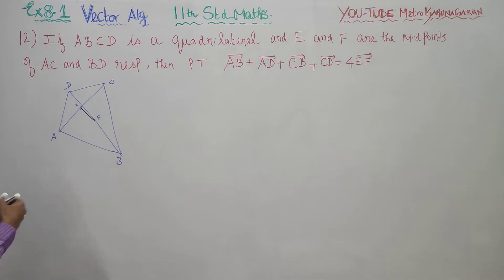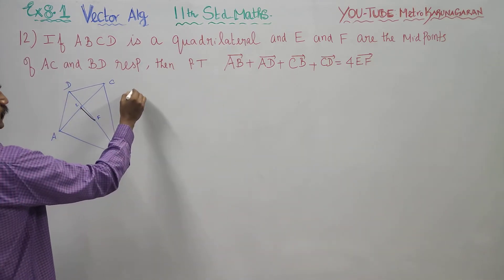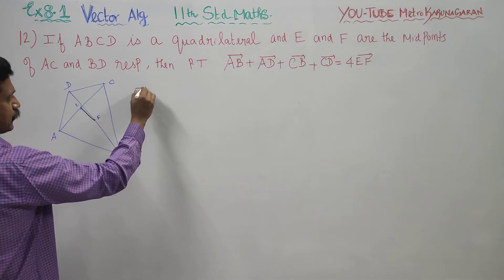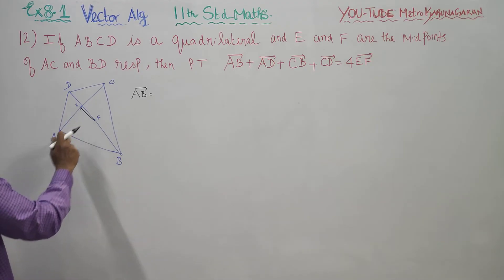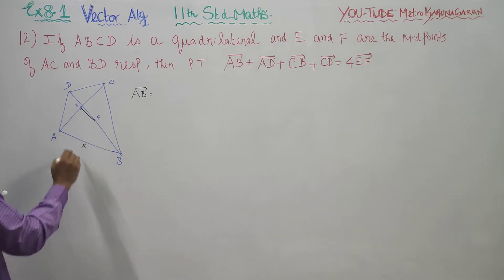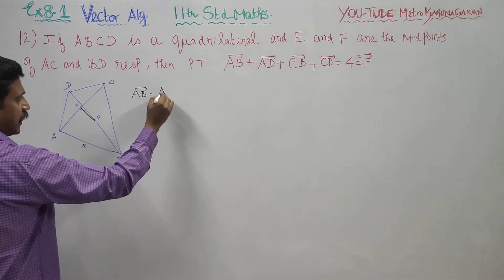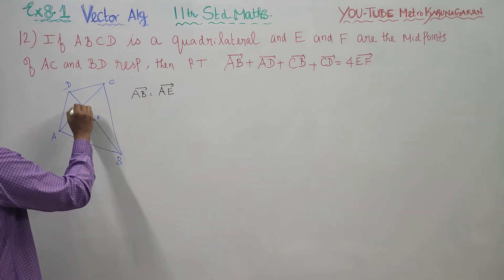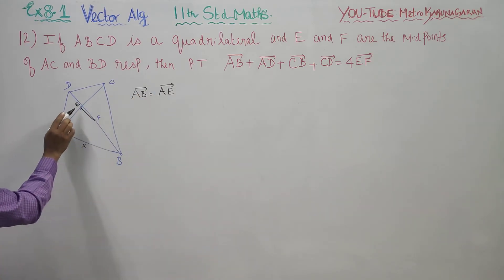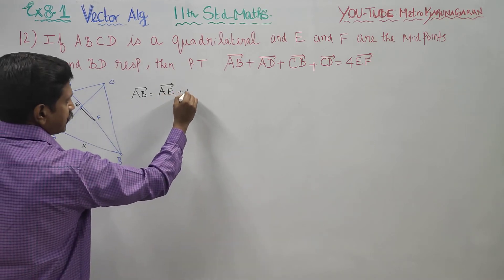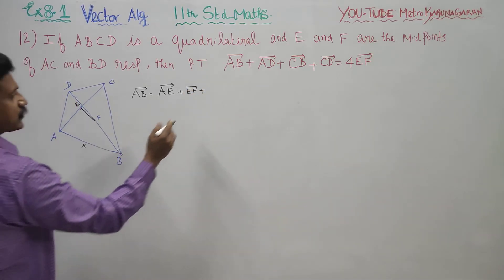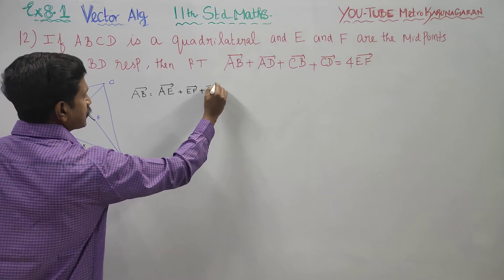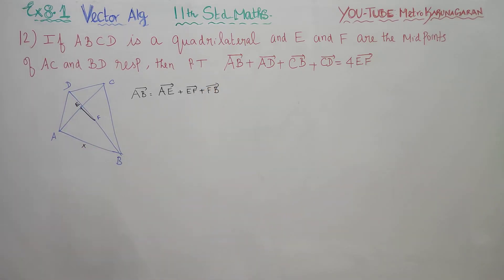My travel must be through EF. AB vector: since AB is not a direct line through EF, we take a diversion. The path goes AE, then EF, then FB. So AB vector equals AE plus EF plus FB.